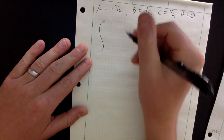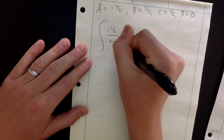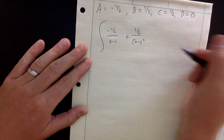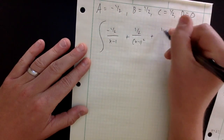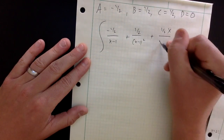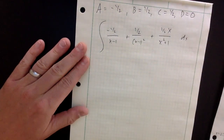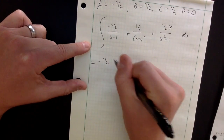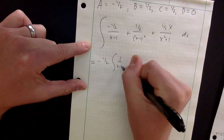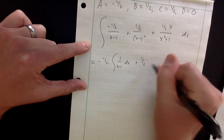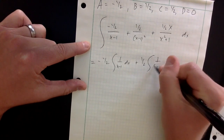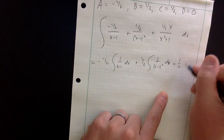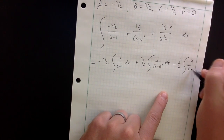Putting this all together, when we integrate we have: the integral of (minus one half) over (x minus 1) plus (one half) over (x minus 1) squared plus (one half)x over (x squared plus 1) dx. It's helpful to think of this as three separate integrals: minus one half times the integral of 1 over (x minus 1), plus one half times the integral of (x minus 1) to the minus 2, plus one half times the integral of x over (x squared plus 1) dx.